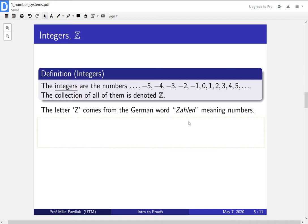As a bit of trivia, the letter Z comes from the German word zahlen, meaning numbers. So in case you were wondering.